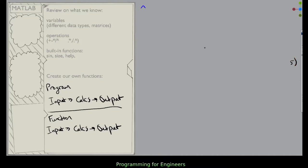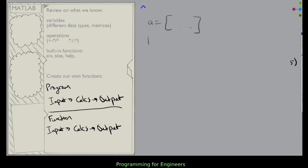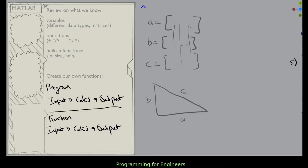Let's look at an example. Say you repeatedly had this problem where you're given matrices A and B, and you're trying to compute C, the hypotenuse. Your boss is relentless — day after day he sends you new matrices, and you have to type in A dot to the power of 2 plus B dot to the power of 2, all dot to the power of 1 over 2. This is just driving you crazy.